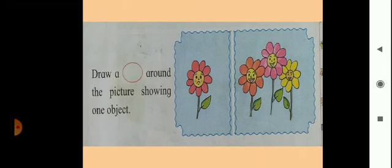Now you can see here flowers. In the first box we can see one flower which is lonely and looks sad. In the second box we can see three flowers which are happy because they are together. The question is: draw a circle around the picture showing one object. We have to circle the single flower in the first box.